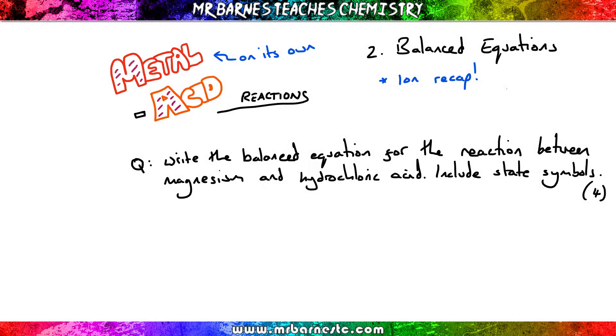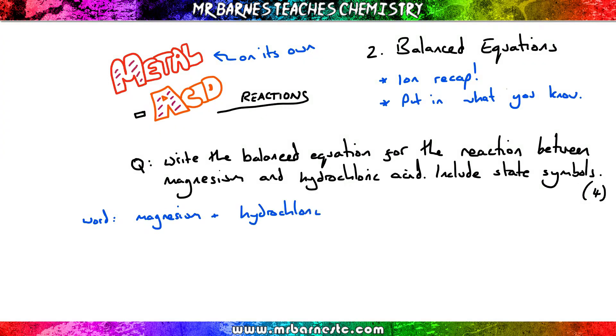So I've got a question here: write the balanced equation for the reaction between magnesium and hydrochloric acid, including state symbols. I always recommend putting in the information you know first. So we start off: we're reacting magnesium with hydrochloric acid, hydrochloric acid makes a chloride so I'm going to get magnesium chloride, and it's a metal on its own so I'm going to get hydrogen.